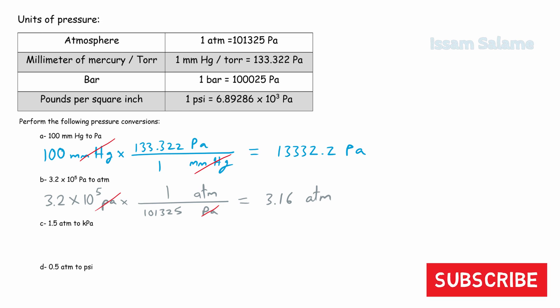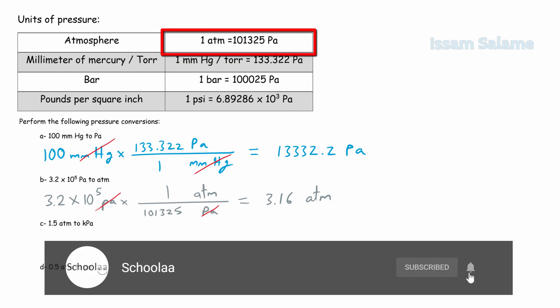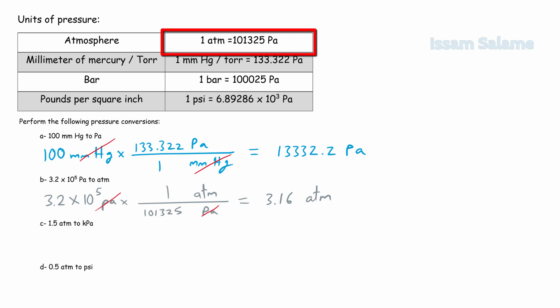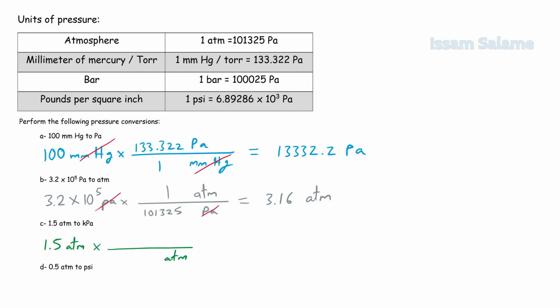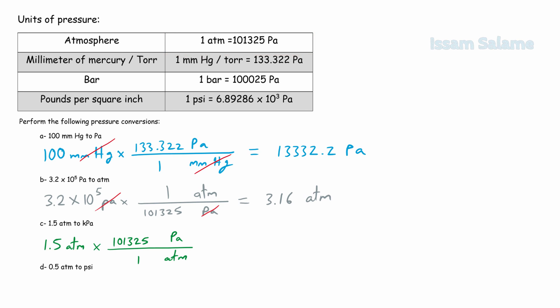Exercise C: convert 1.5 atmosphere to kilopascal. There is no direct relationship between atmosphere and kilopascal in the table, so we use two conversion factors: first convert atmosphere to Pascal, then Pascal to kilopascal. Starting with 1.5 atm, multiply by (101,325 Pa / 1 atm), then multiply by (1 kPa / 1000 Pa). Cancelling units and multiplying numerators, then dividing by denominators, the answer is 151.9875 kilopascal.